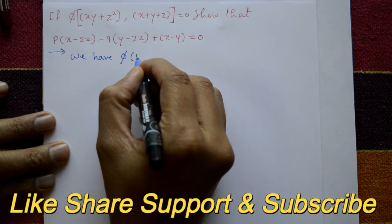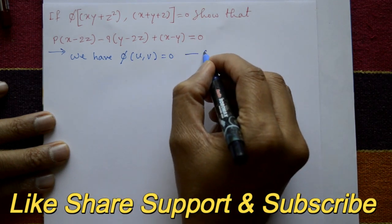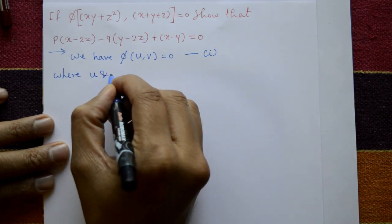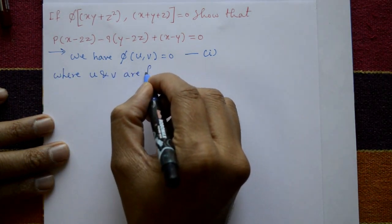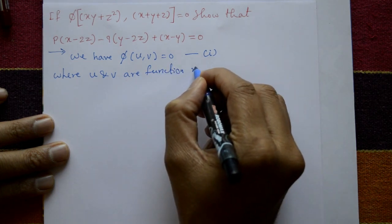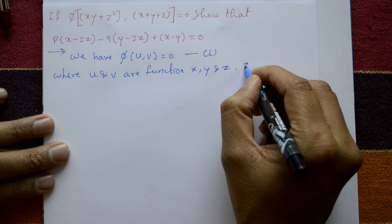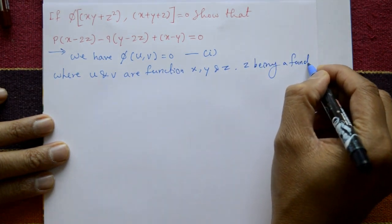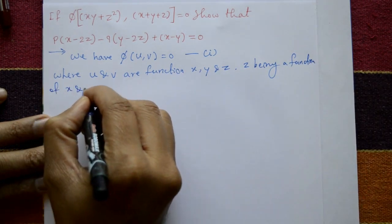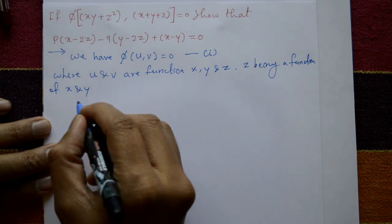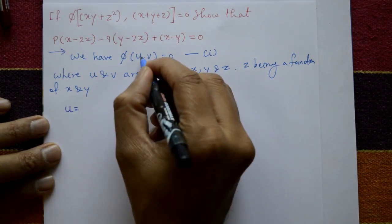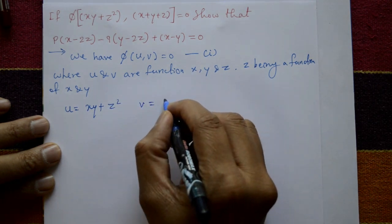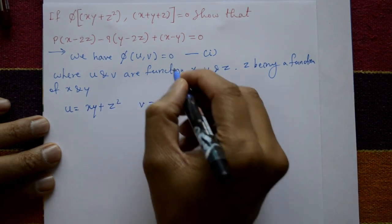We have φ(u, v) = 0, this is equation number one. Here u and v are functions of x, y, and z, z being a function of x and y. So u = xy + z² and v = x + y + z. This is u and this is v.